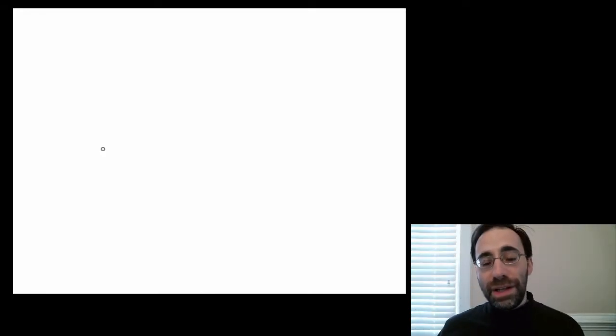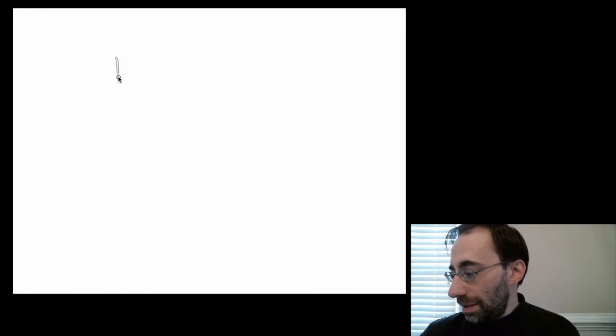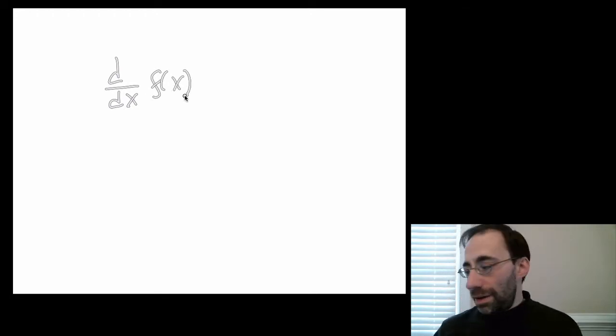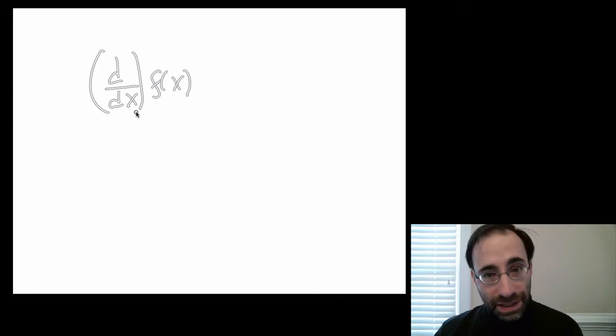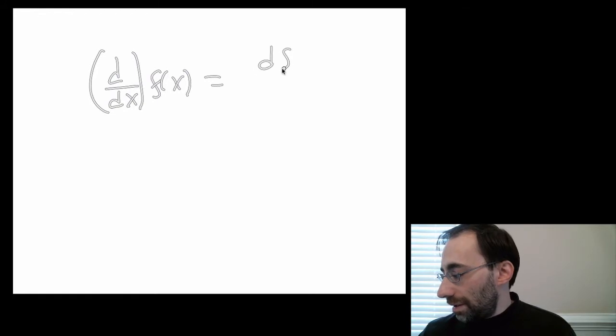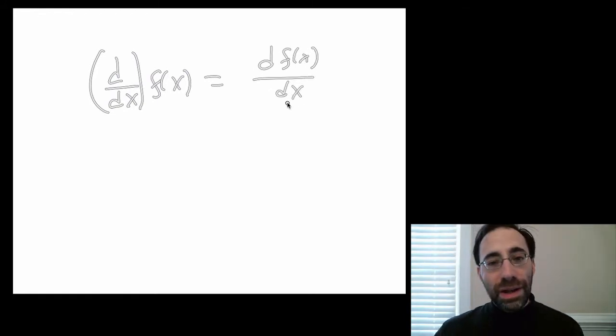Far more common is the notation that Leibniz used. Here, this thing, read d by dx, is an operator. It operates on the function to give this thing, which is read df dx. It's the derivative of f with respect to x.